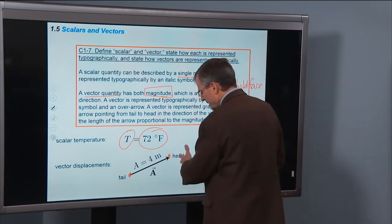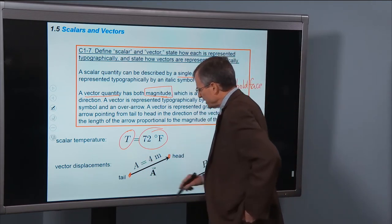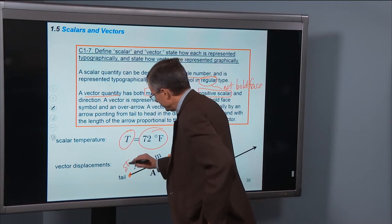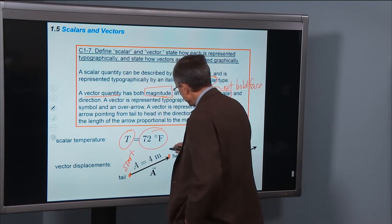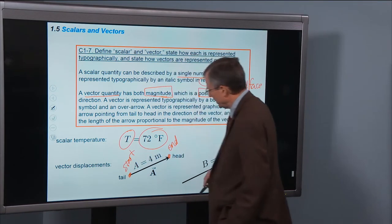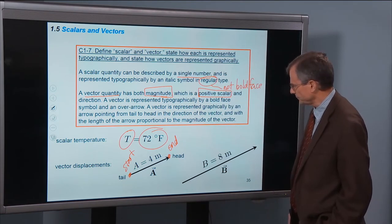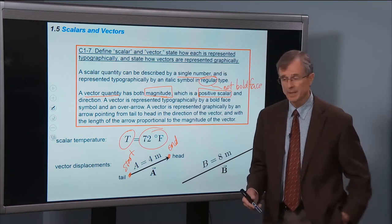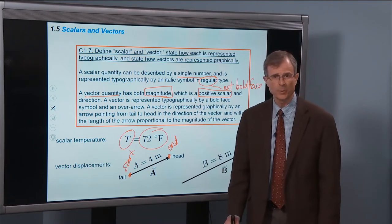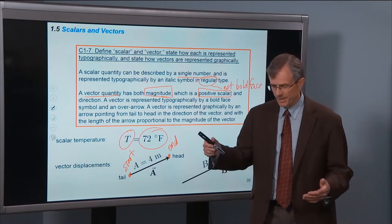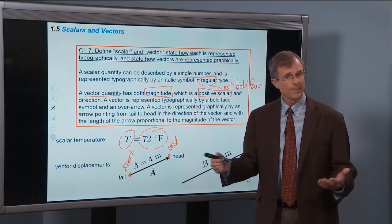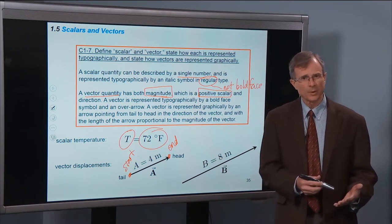So this is an example of a vector displacement. I start here, I end here, and so it's like going from Logan to Smithfield, however many miles it is, 4 miles, I don't know. And what direction is it in? Well, it's north. Smithfield is north of us.